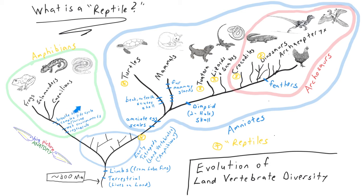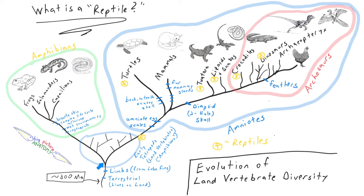Amphibians have a complex life cycle with usually aquatic larvae, living in fairly wet environments, and also a great capacity to regenerate — probably a derived characteristic, especially in the salamanders, allowing them to regenerate entire limbs. So that's our modern amphibian diversity arising from within this vast group of early land vertebrates.